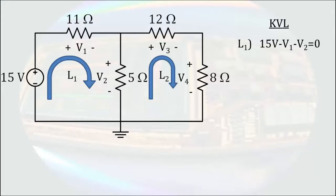Going around L2, we go up by V2, down by V3, and down by V4. We end up with V2 minus V3 minus V4 equals zero.